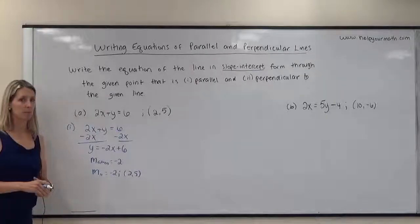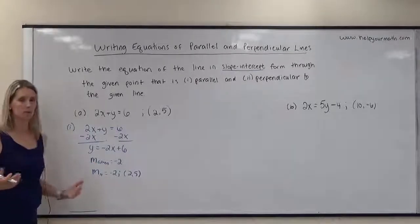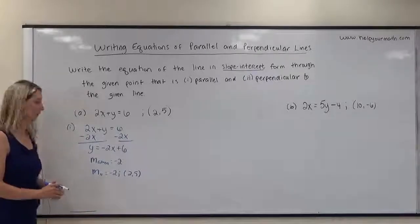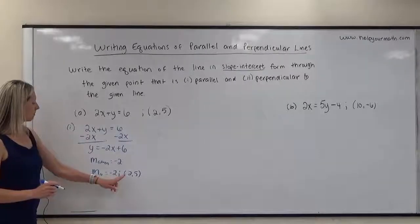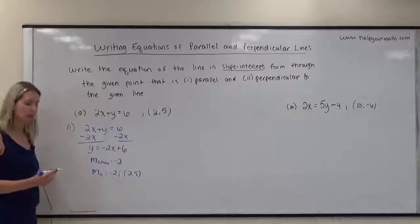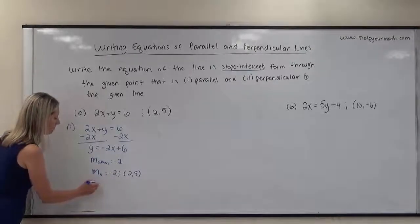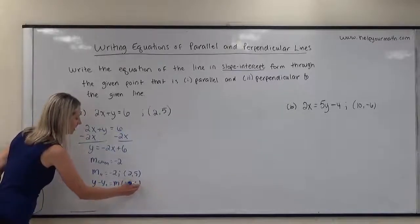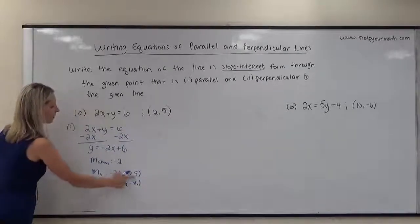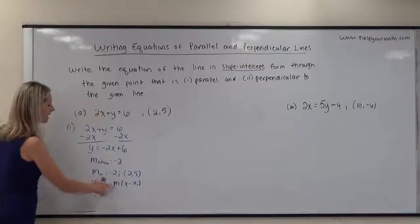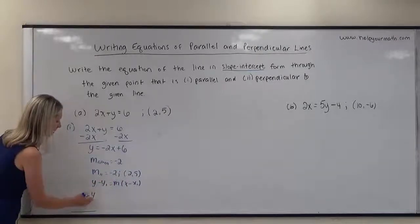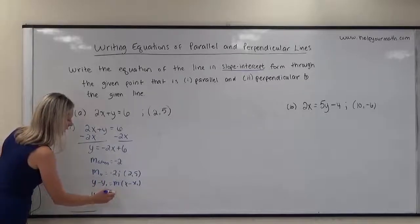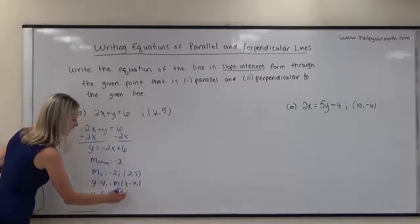I like to use point-slope form rather than solving for b in y=mx+b. So I'm given the point (2, 5) and the slope negative 2. Point-slope form is y minus y₁ equals m times (x minus x₁), where (x₁, y₁) are the coordinates of the point and m is the slope. That gives me y minus 5 equals negative 2 times (x minus 2).